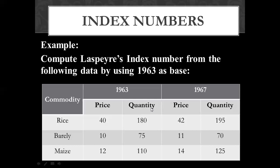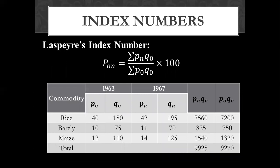The next year will be the second year. Whether it is one year, two years, or three years, it will be the current-year price and current-year quantities. The price of 1967 is the current-year price and Qn is the current-year quantity. The price and quantity of three commodities are the same for 1963 and 1967. You have to apply Laspeyre's index number and Paasche's index number. The price index number equals summation of Pn times Q-naught, divided by summation of P-naught times Q-naught, multiplied by 100.